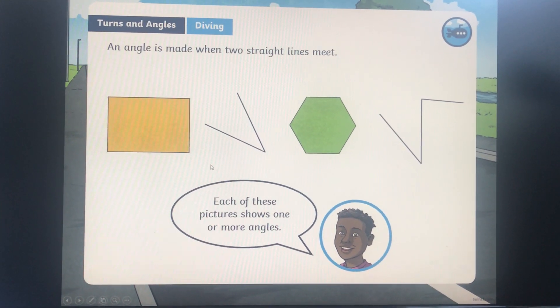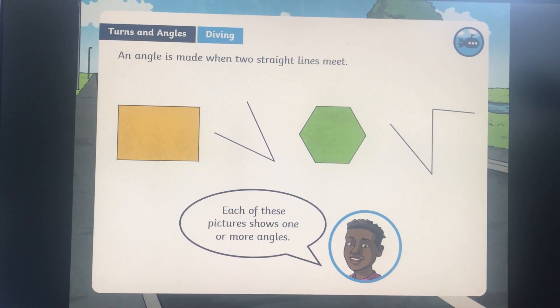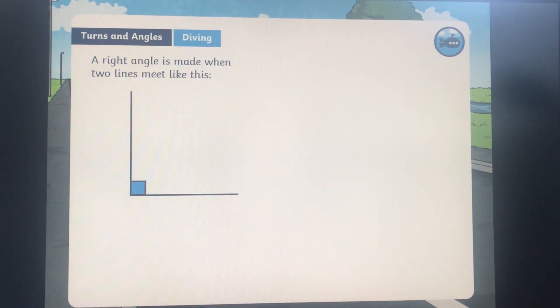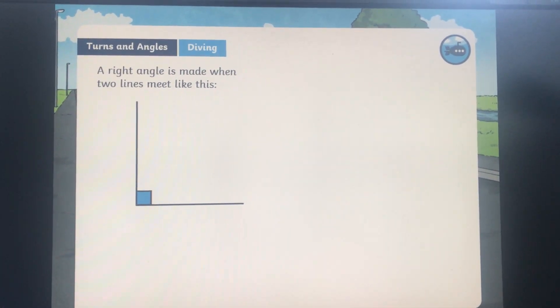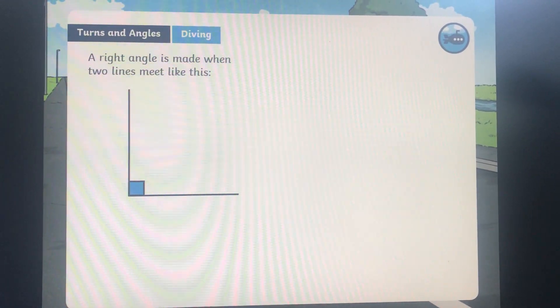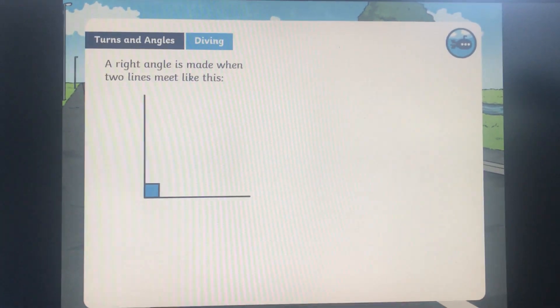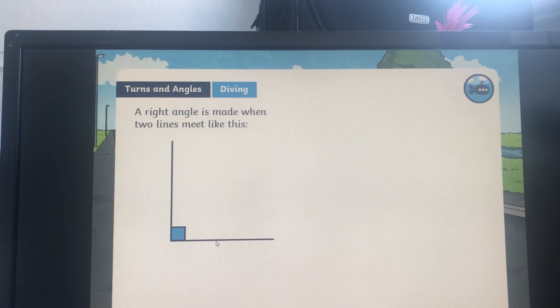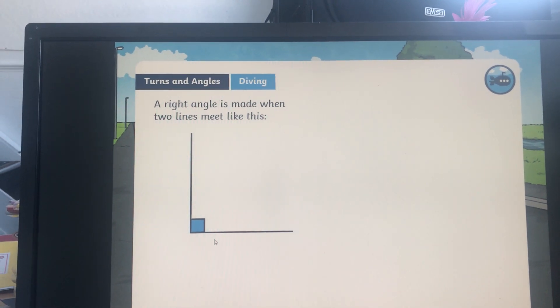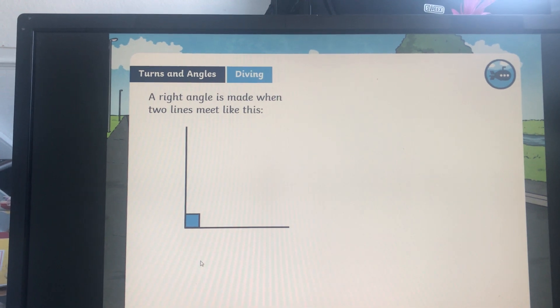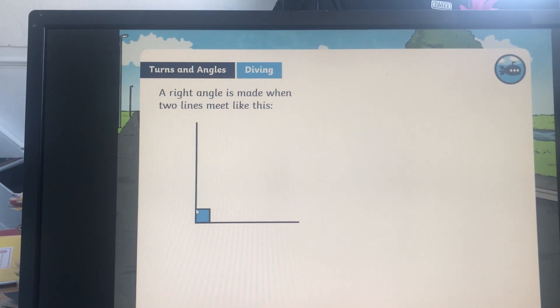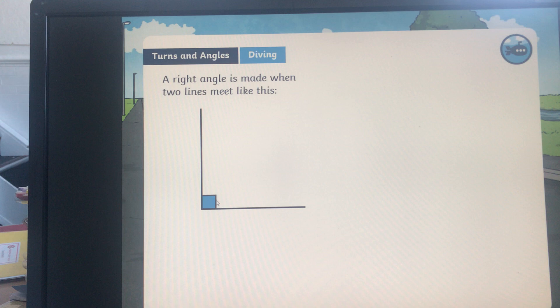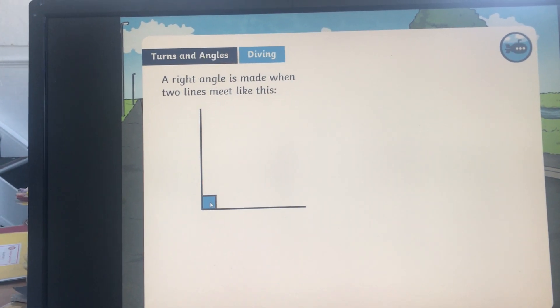So each of these pictures shows one or more angles. There is one specific type of angle that we need to know about today that has a particular name and that is this angle here. It's called a right angle and this is something that you may well have come across in year two. A right angle is where two lines meet and it looks very much like a capital L shape. And we show that this is a right angle by having usually a square where the angle meets each other here.